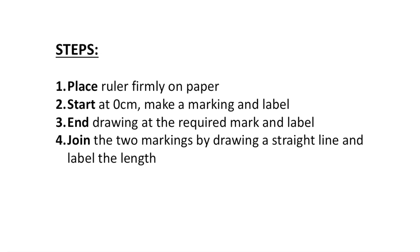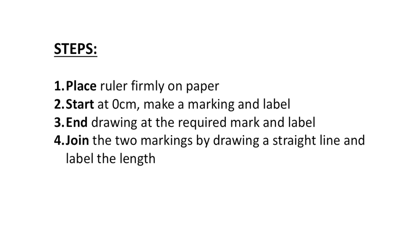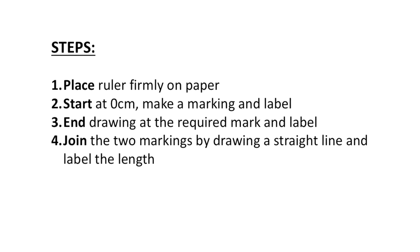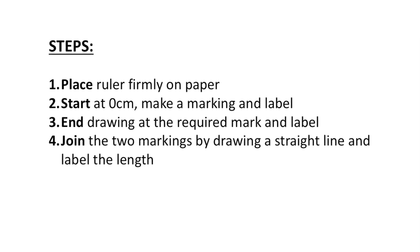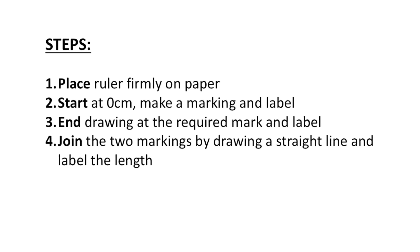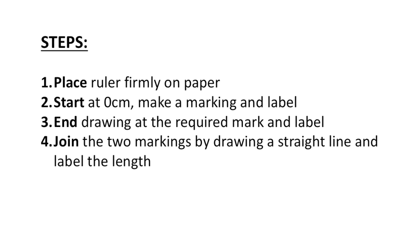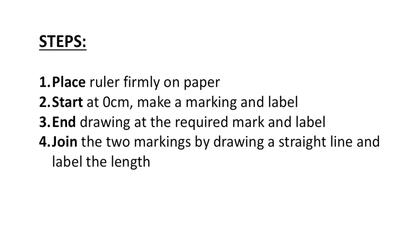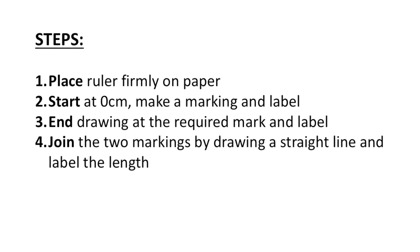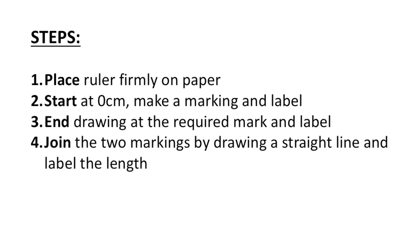Now let's recap on the four steps that we did to draw the line. So first we place the ruler firmly on the paper, then we look for zero and start at zero, and then we make a marking and label it. Follow it by ending the drawing at the required mark and label them. Lastly, join the two markings by drawing a straight line and then label the length on top of the line.